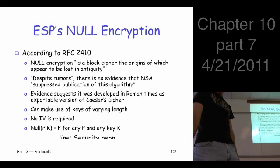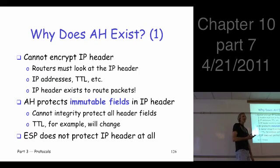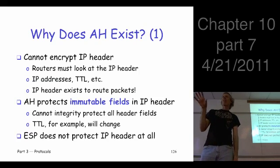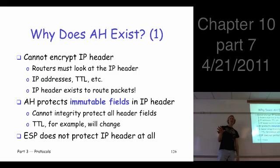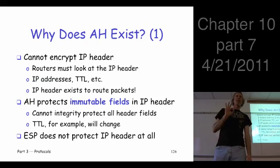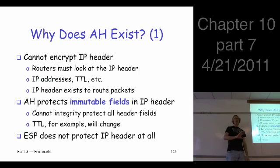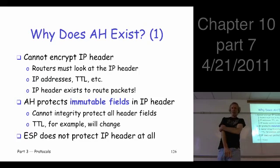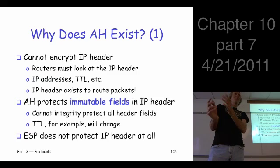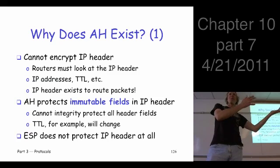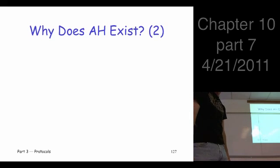So how is ESP with null encryption different from AH? Not much — different by a little bit, but not much. That raises the question: why does AH exist at all? There are three possible explanations. First: you can't encrypt the header, but you can integrity protect some header fields. AH does that — it integrity protects some fields of the header — whereas ESP doesn't touch the header. So AH gives you a little bit more integrity coverage. But that's not that big a deal; you could have easily built that into ESP as an option.